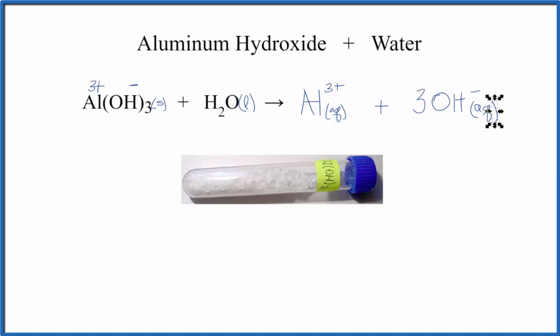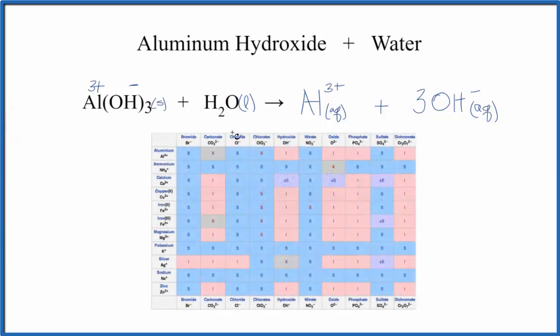To do that, we can use a solubility table. When we look at our solubility table, these are the positive ions, and the negative ions are on the top. So here's Al3+, that's the aluminum, and we're going to go over to the hydroxide. And we see that there's an I there.